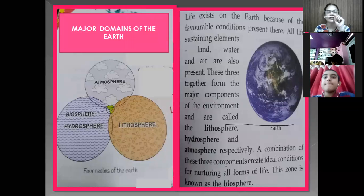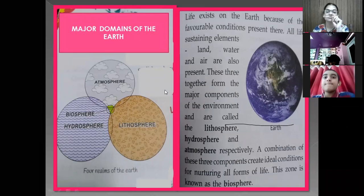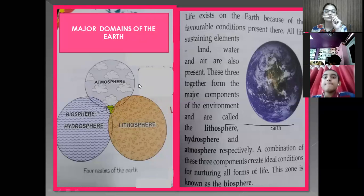This air, water and land — these three are the major components of the environment and they are called lithosphere, hydrosphere, and atmosphere. You can see in this diagram there is atmosphere, lithosphere, hydrosphere. A combination of these three components creates an ideal condition for nurturing all forms of life. This zone is known as the biosphere.